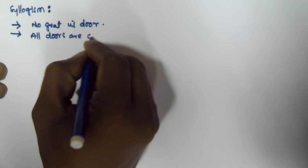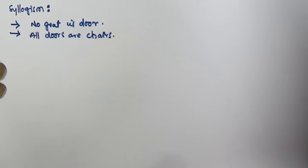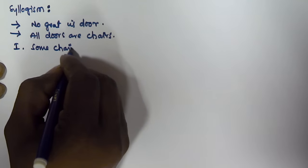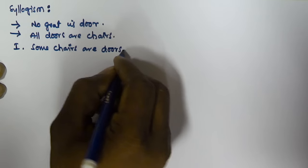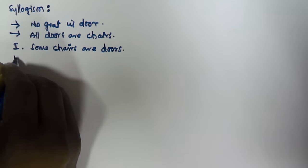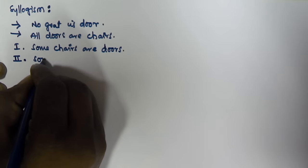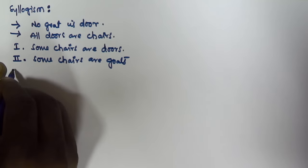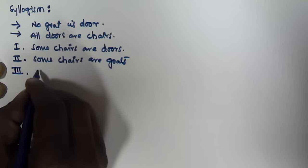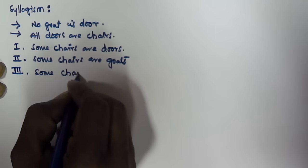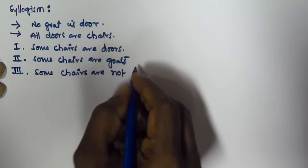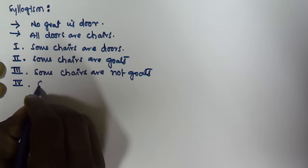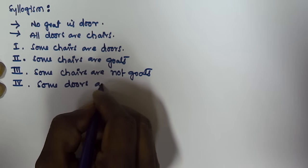The second syllogism statement given is: All doors are chairs. The conclusions given are: first, some chairs are doors; second, some chairs are goats; third, some chairs are not goats; and fourth, some doors are goats.